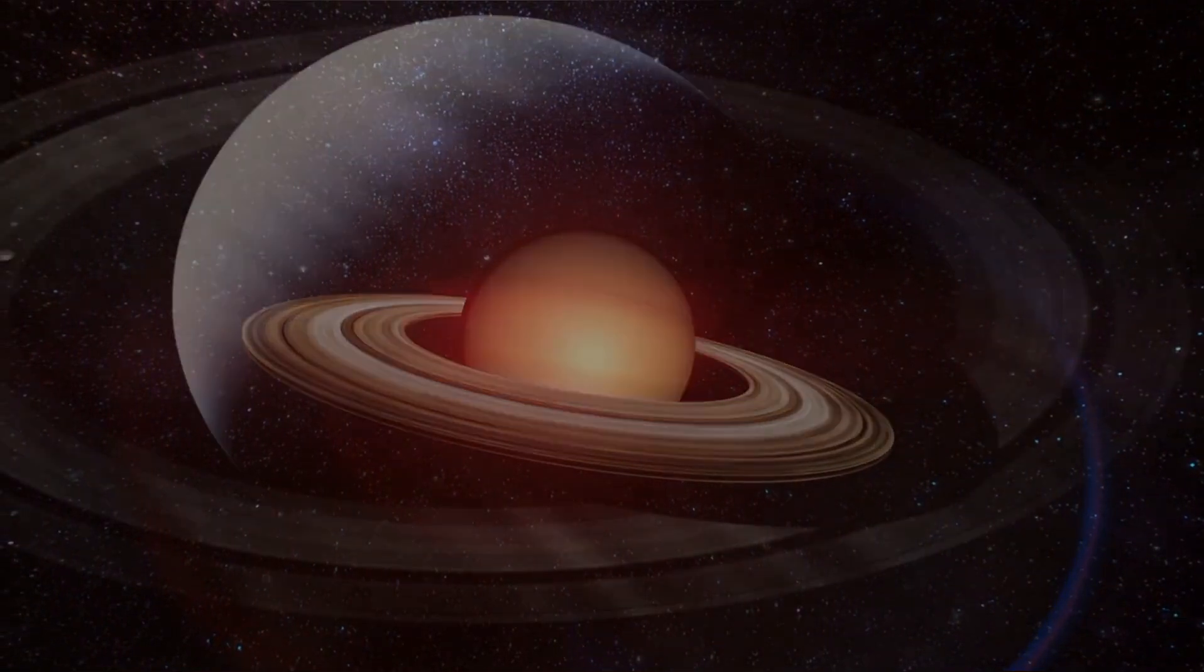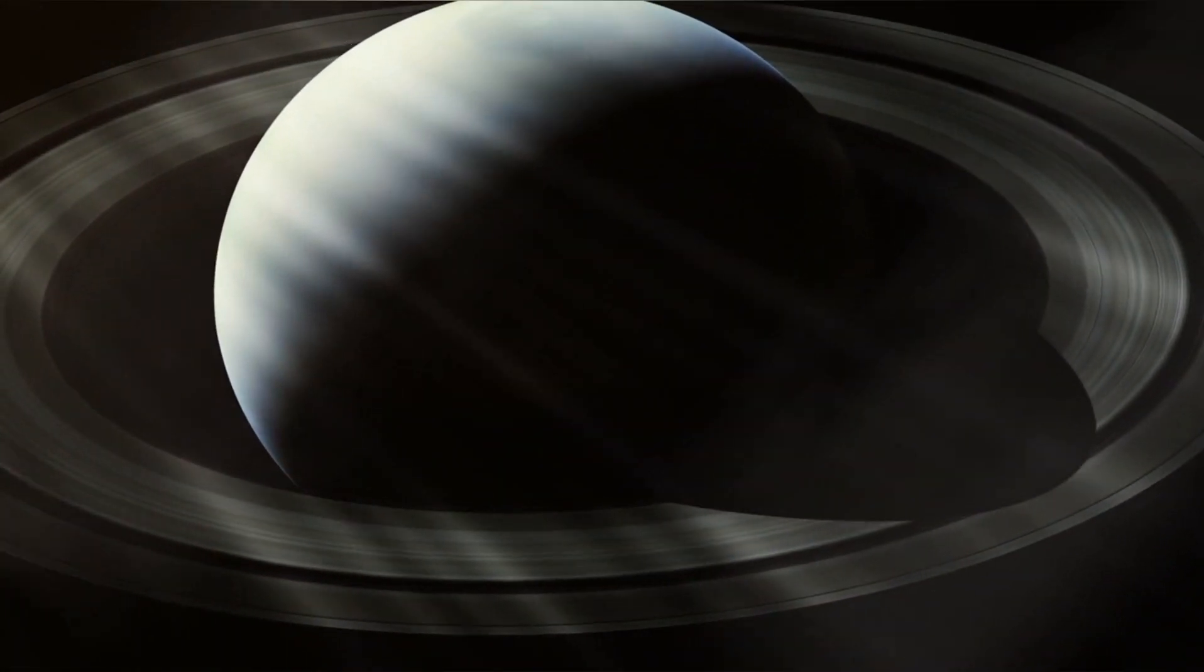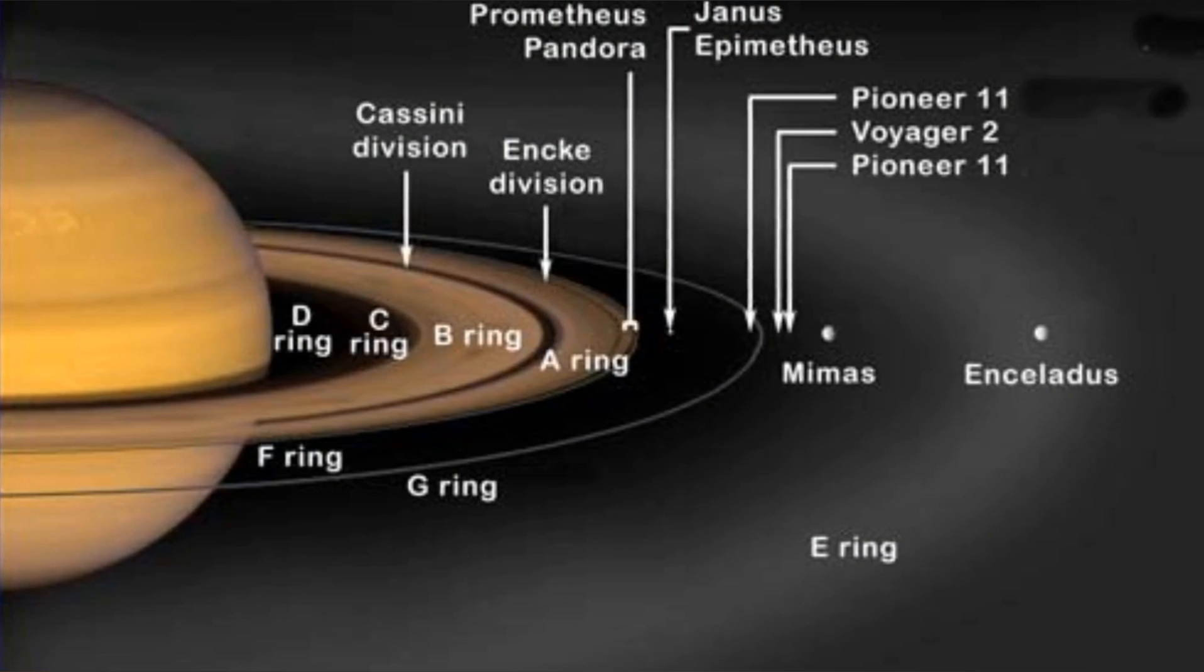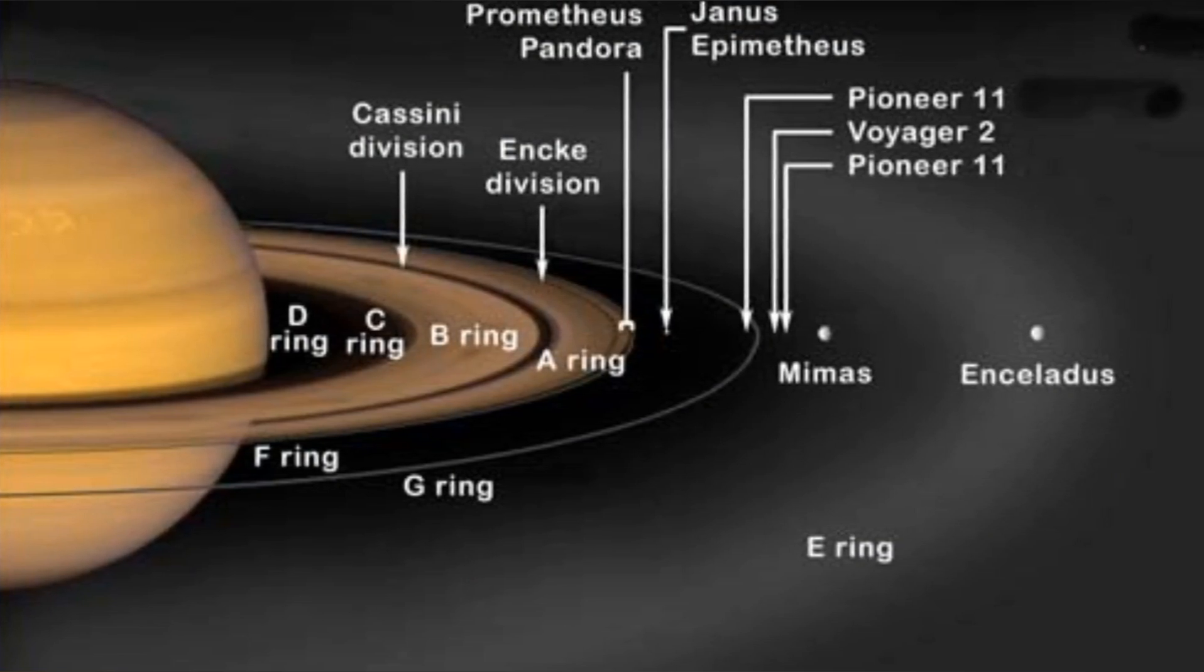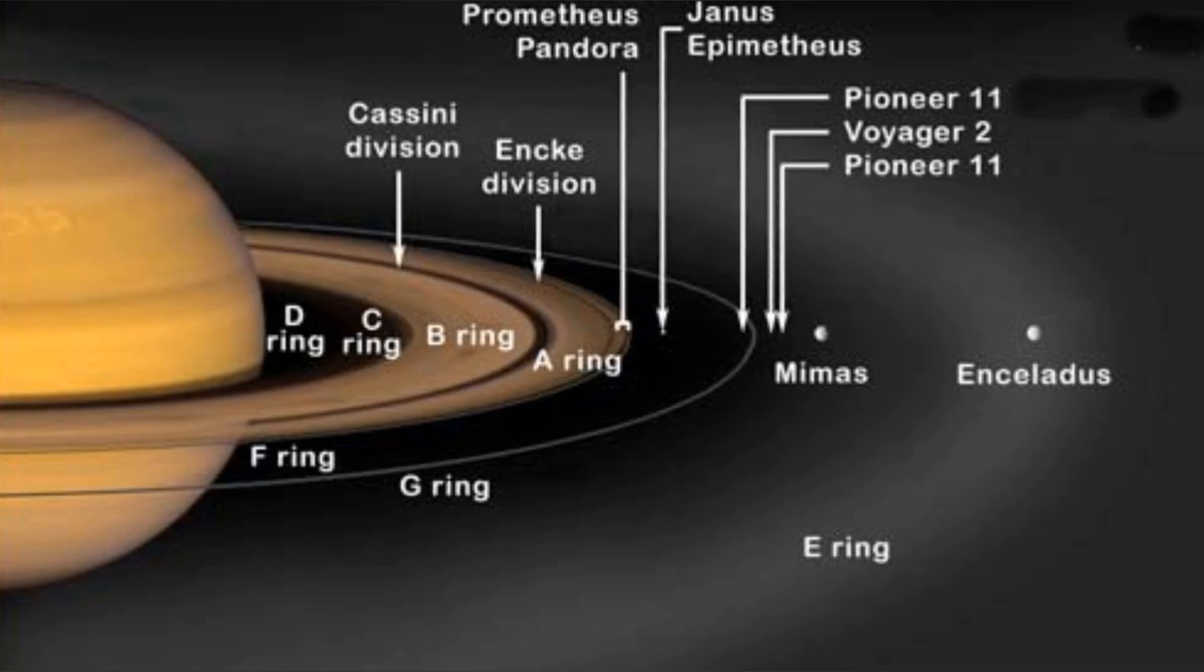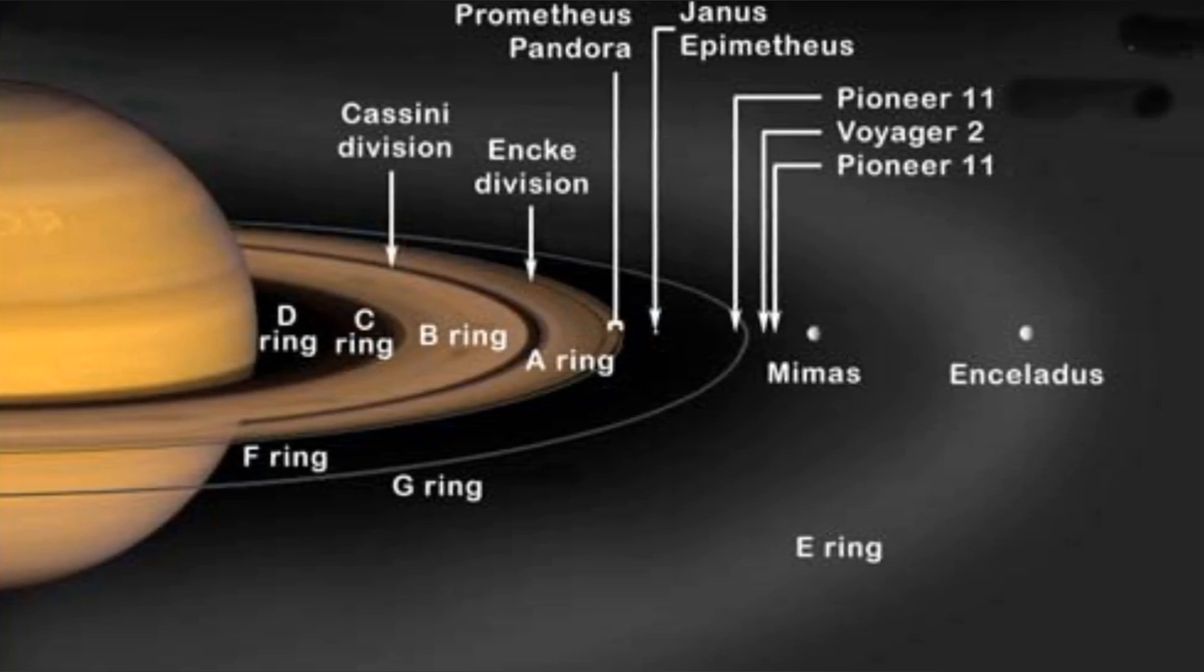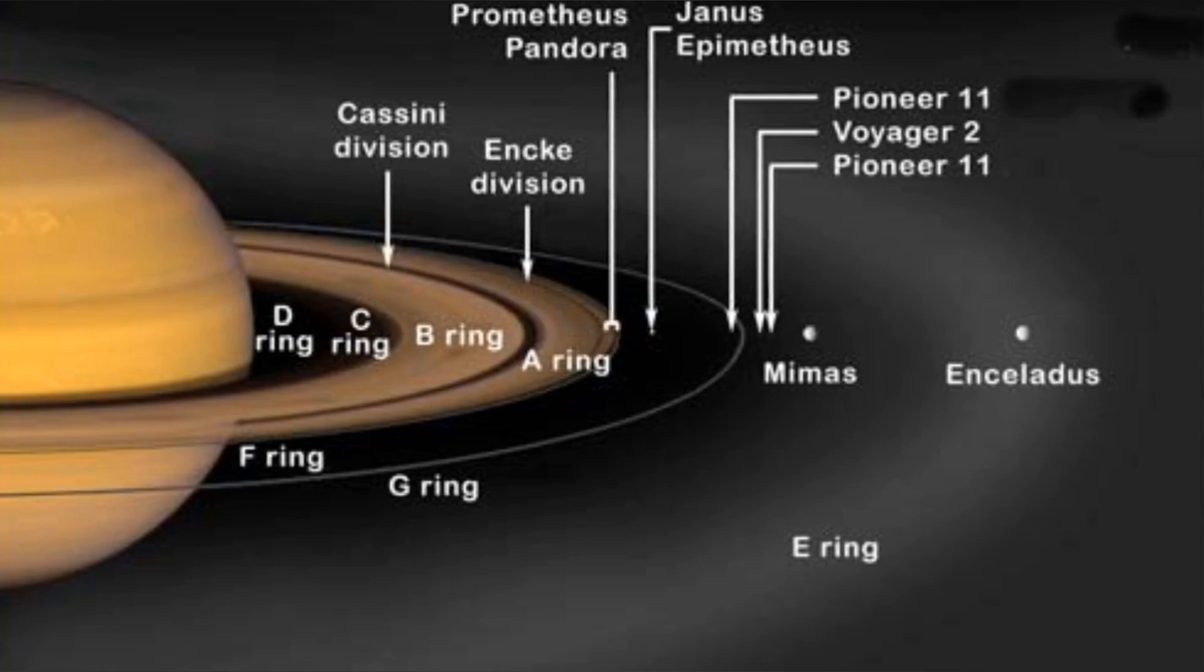Saturn's Ring System: Saturn's iconic ring system is the largest in the solar system. Comprised of seven major ring groups, including the A, B, C, D, E, F, and G rings, these intricate bands of rock and ice particles have fascinated astronomers for centuries.